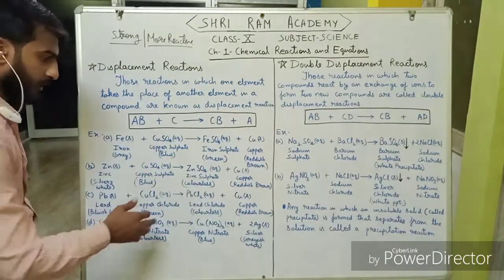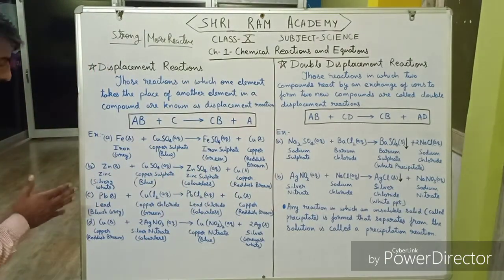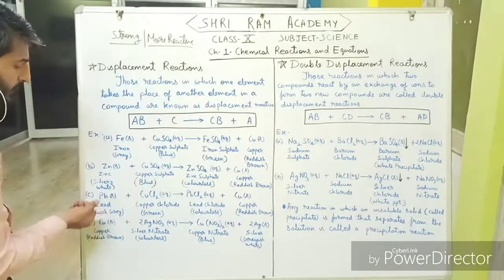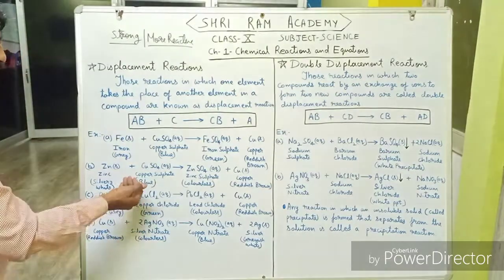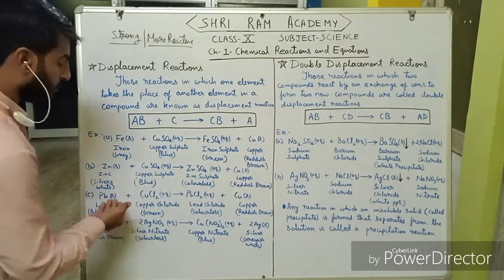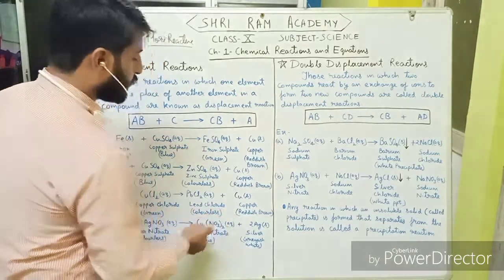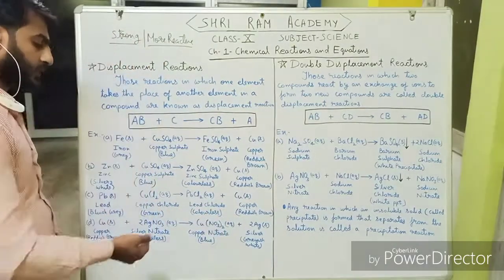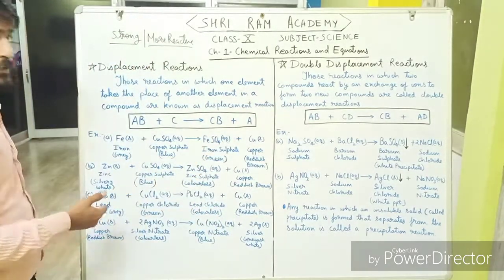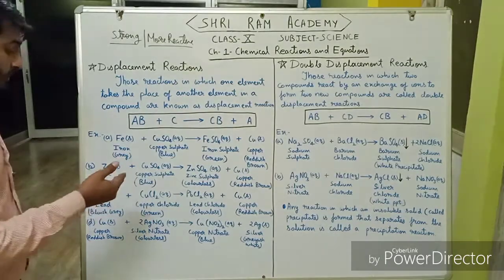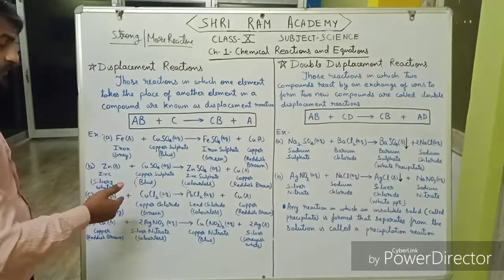The third example is lead reacting with copper chloride. When lead reacts with copper chloride, it forms lead chloride and copper. This happens because lead is more reactive than copper.